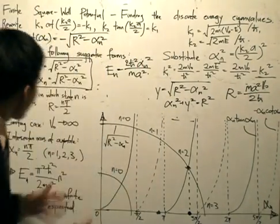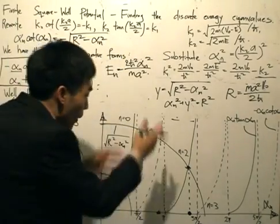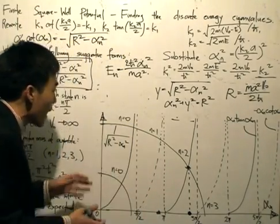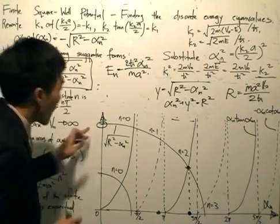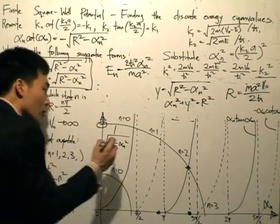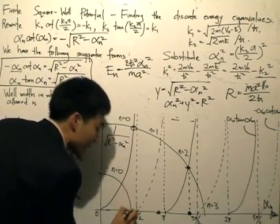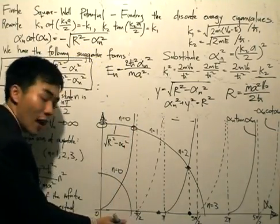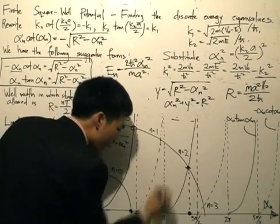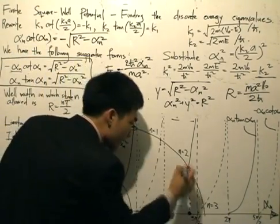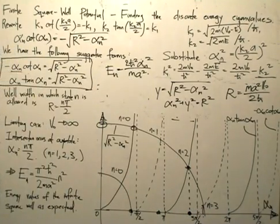Why are the energies discrete? Because we have these trigonometric functions with a certain period. Taking the larger outer circle, the first solution n=0 is one intersection. I find where it intersects with the alpha_n axis, giving one value. Intersect again — another solution. Intersect again — another solution. And intersect again — another solution.